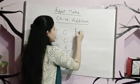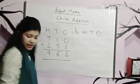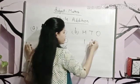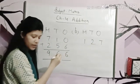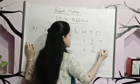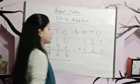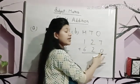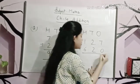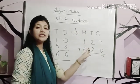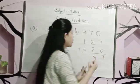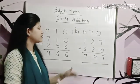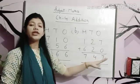Let's take one more example: 127 plus 620. First we will add the 1s column — 7 plus 0 is equal to 7. Then the 10s column — 2 plus 2 is equal to 4. Then the 100s column — 1 plus 6 is equal to 7. The answer we got is 747.